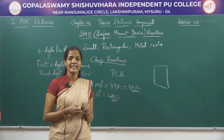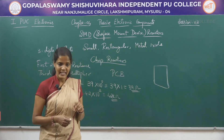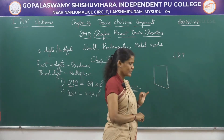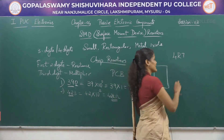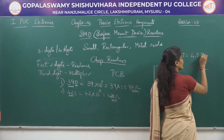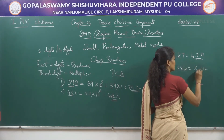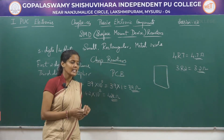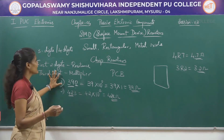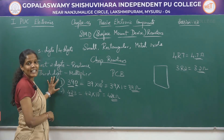For resistance values less than 10 ohms, the letter R is used on the SMD resistor to denote the decimal point. For example, 4R7 printed on an SMD resistor indicates a value of 4.7 ohms. Similarly, 3R2 indicates 3.2 ohms. So the letter R denotes the decimal point for resistance values below 10 ohms.